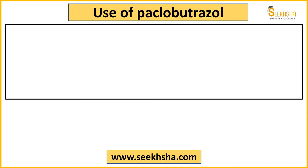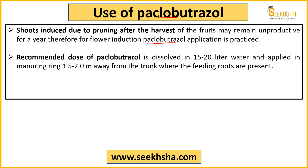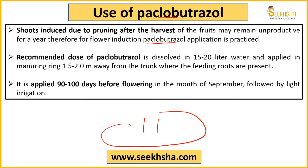When you are doing high density planting, one problem you may face is that fruit bearing does not happen in the next season. For that, a solution is Paclobutrazol. Basically, when you prune the shoots after harvest, the plant remains unproductive for one year because flowers are not induced. So for flower induction, you can use Paclobutrazol. Around 15 to 20 litres of water is used with it, and it is added into the soil at a distance of 1.5 to 2 meters from the trunk. This should be done 90 to 100 days before flowering — in September.